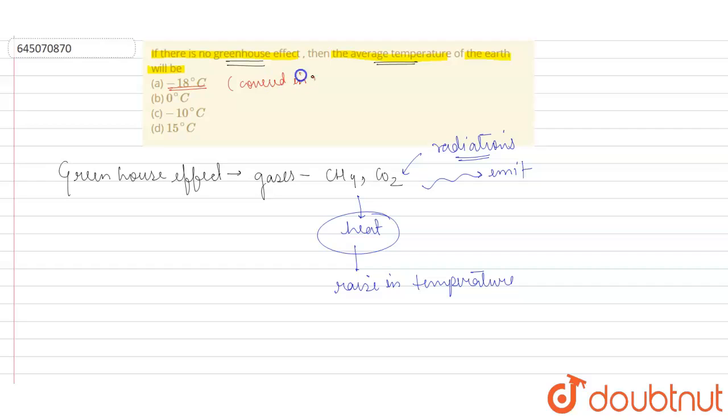If these greenhouse gases are absent, there is no one to absorb this radiation and emit some part of it to maintain the heat. So life would not survive in that particular condition. So the answer is option A.